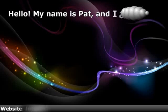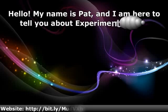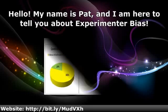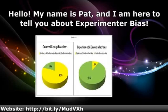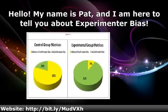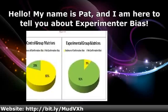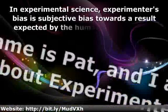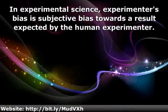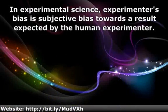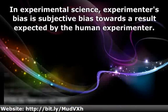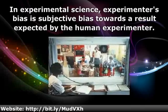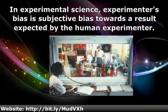Hello, my name is Pat, and I am here to tell you about experimental bias. In experimental science, experimenter's bias is subjective bias towards a result expected by the human experimenter.